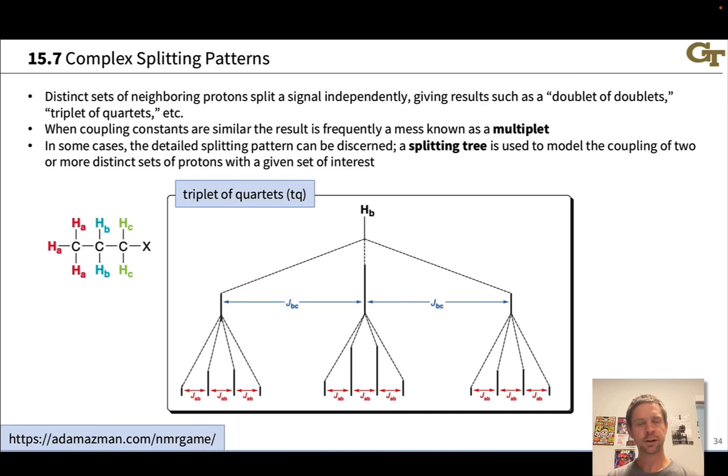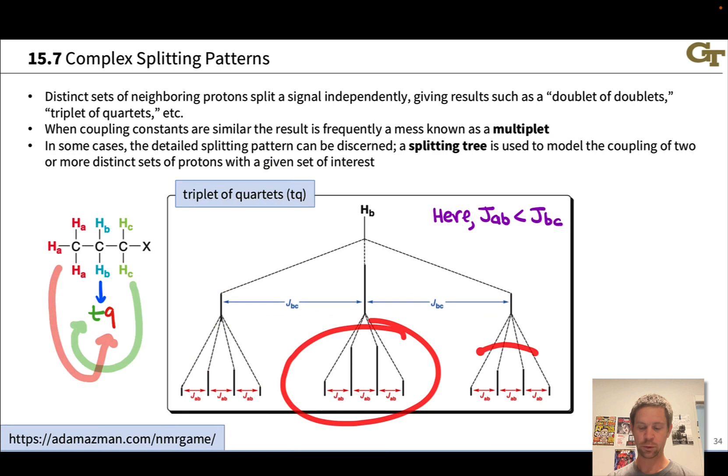On the next slide, we have a situation where the magnitudes of the coupling constants are reversed. Here, JBC is bigger than JAB. This leads to a situation where we still have a triplet and a quartet, but now we have what we might call a triplet of quartets. Because the BC splitting is larger than the AB splitting, the signal has the appearance of three quartets, and notice the one to two to one ratio of the peak heights within each of the triplet subpeaks.